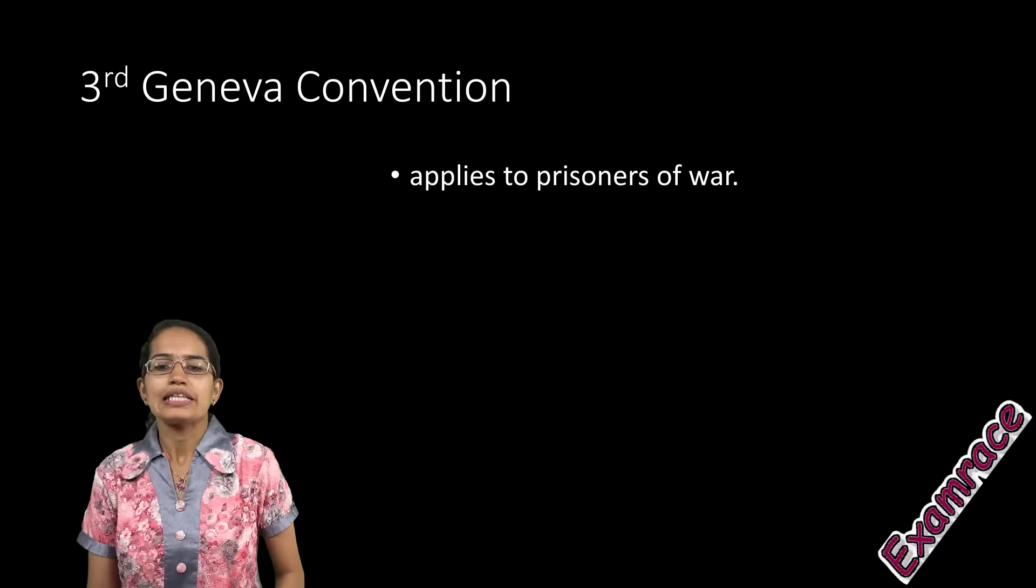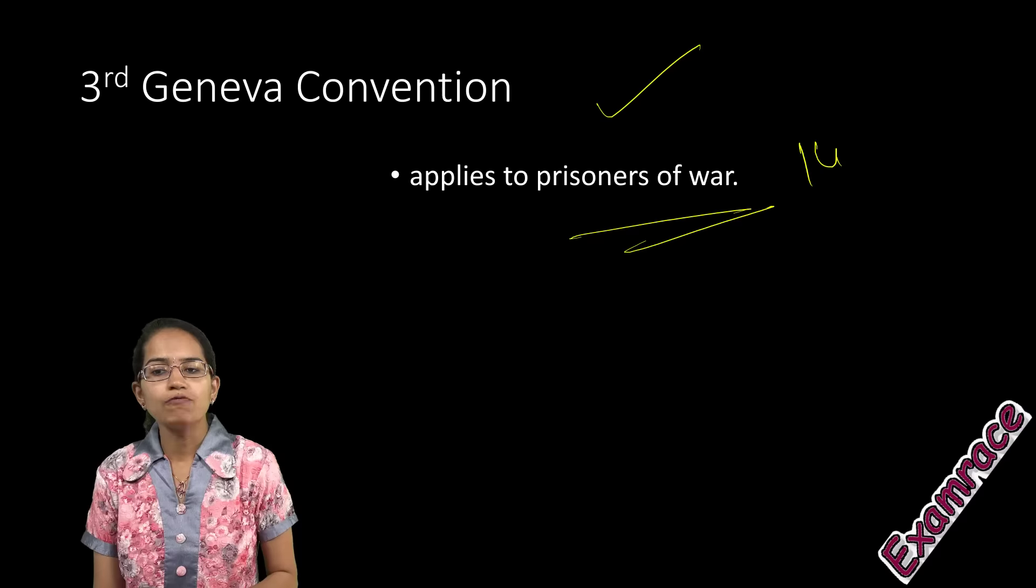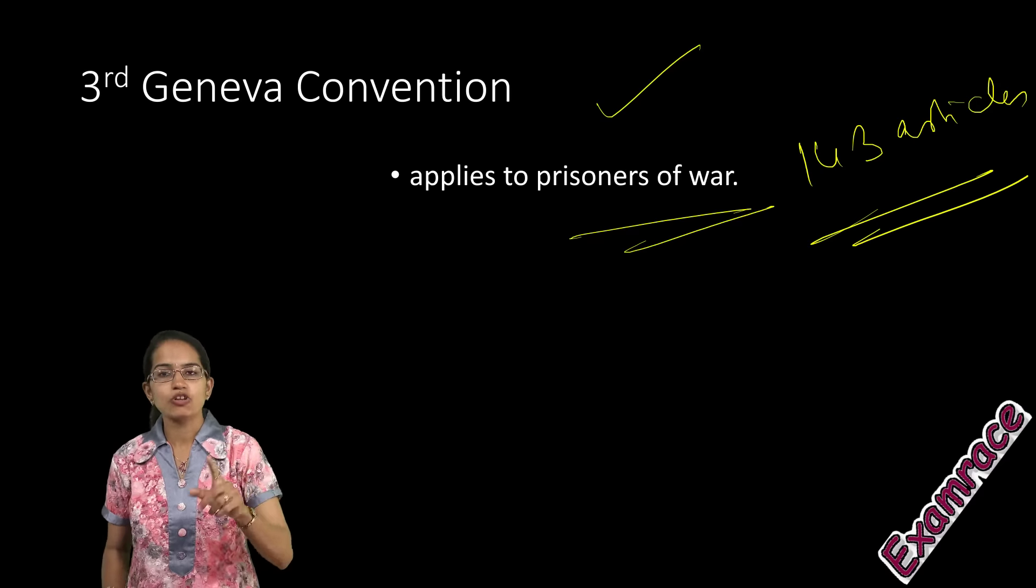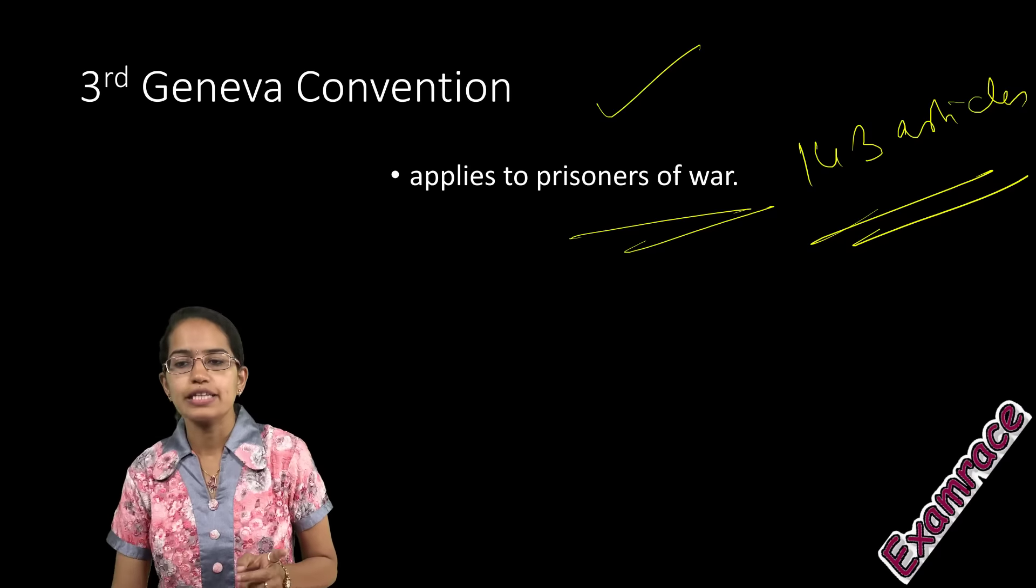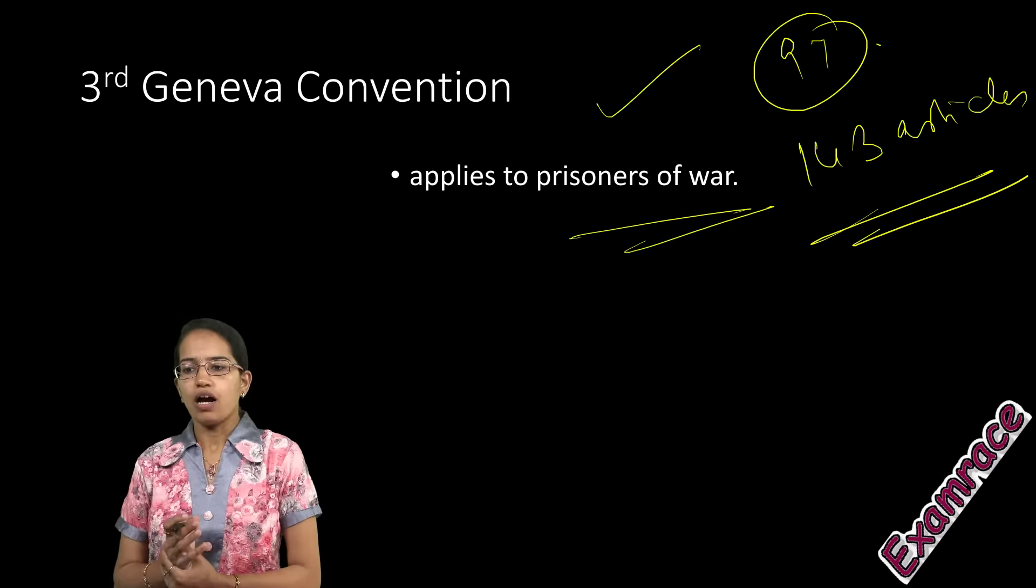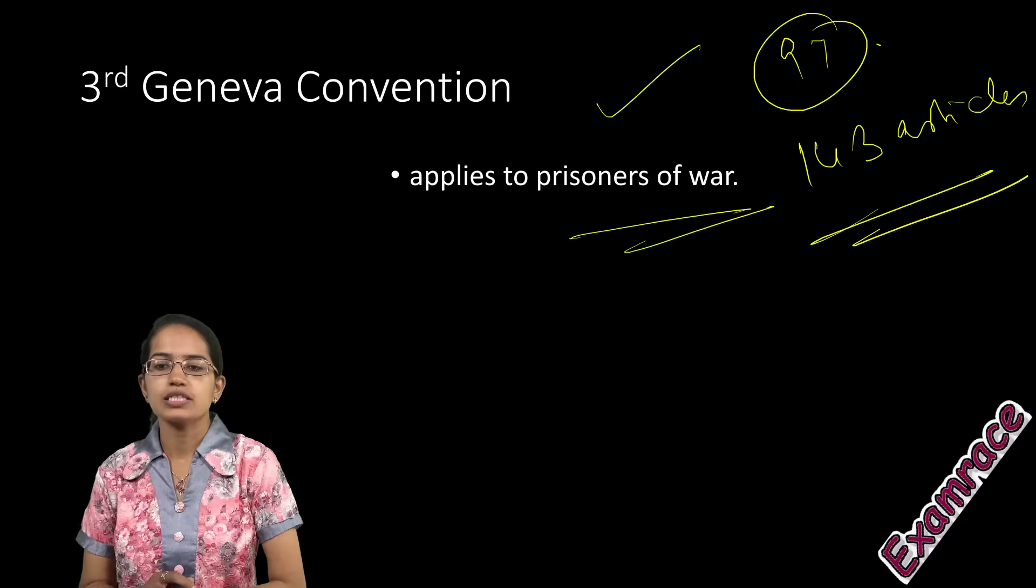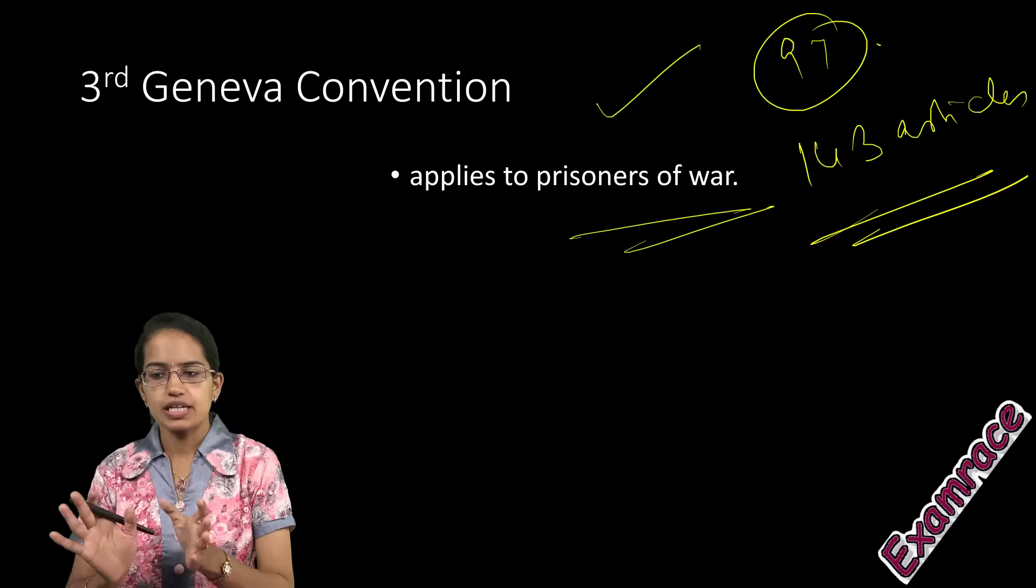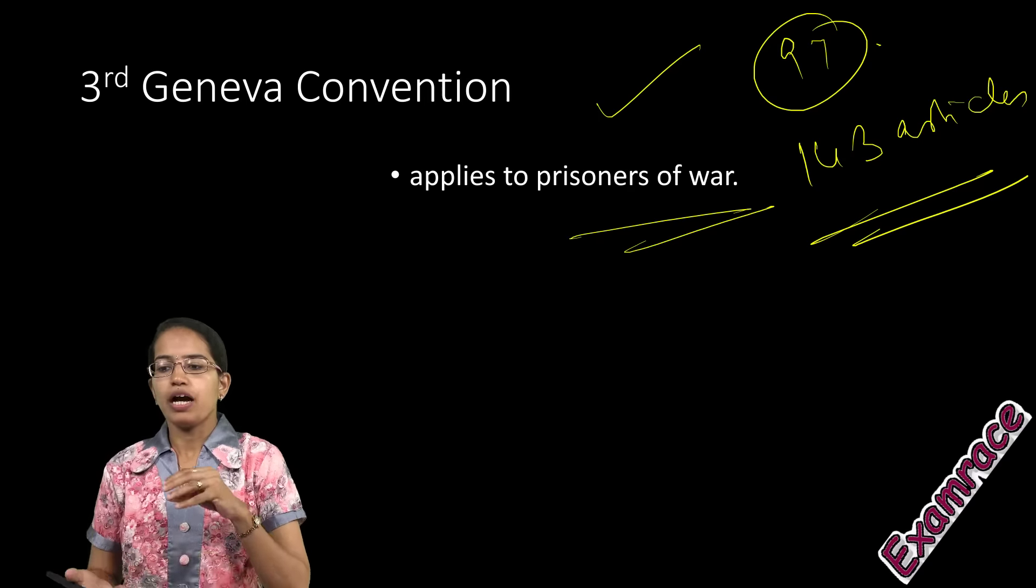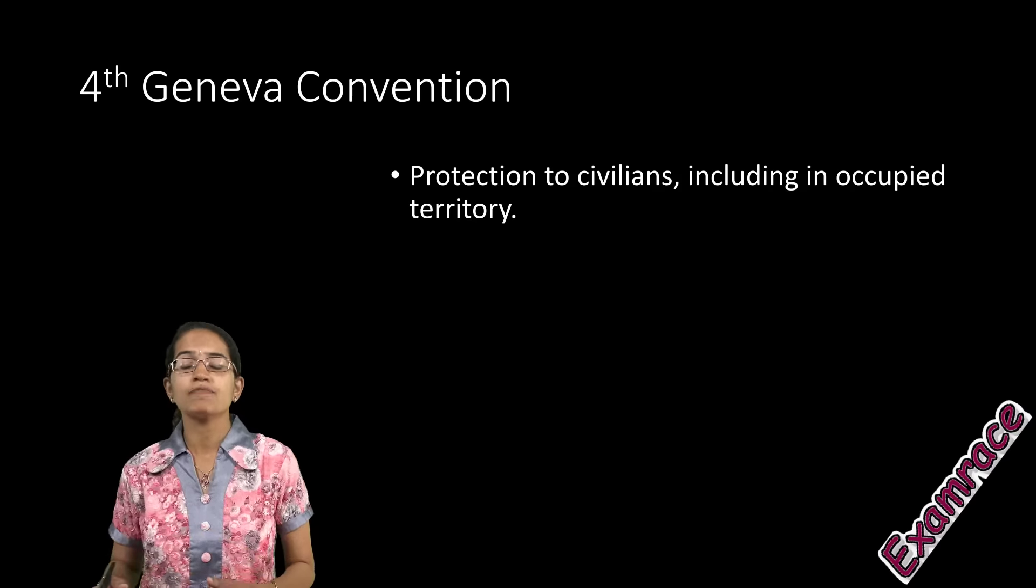The Third Convention deals with prisoners of war and has 143 articles, replacing the previous convention which had only 97 articles. It covers labor of prisoners, financial resources, relief they receive, and judicial proceedings. It has five annexes for model regulations and cards.